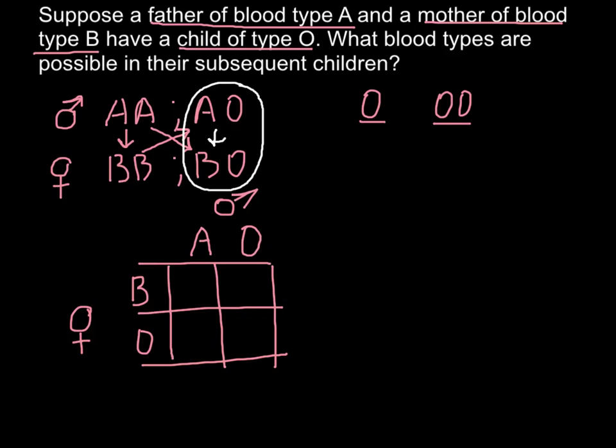And as you see, here we would have AB blood type, here we would have BO, and AO here, and OO here.